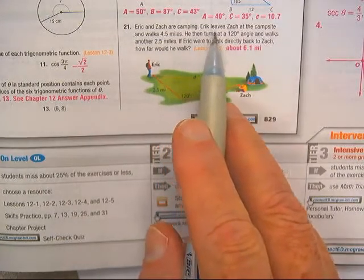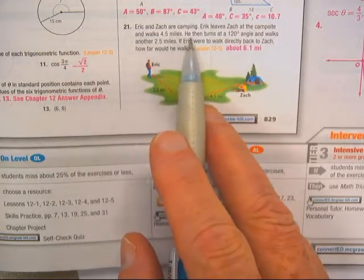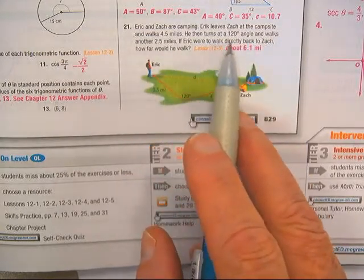Here's problem 21. We got Eric and Zach are camping. Eric leaves Zach at the campsite, walked four and a half miles, turned 120 degrees, walked another two and a half. How far would he walk directly back to Zach?